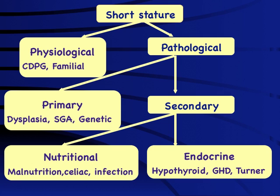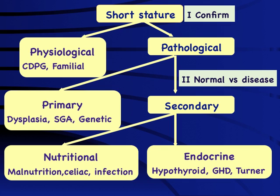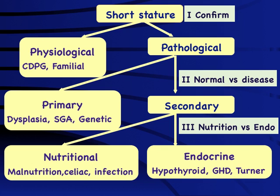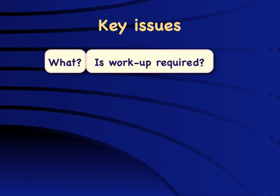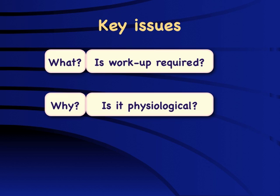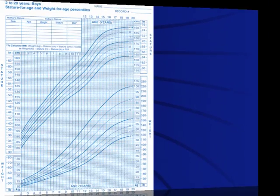Within pathological problems, the issue could lie within the growth plate — in dysplasia, small for gestational age, or genetic causes like Turner syndrome — or there could be secondary causes where the growth plate is normal but the environment is causing the problem, either nutritional (malnutrition, malabsorption, increased requirements, infection) or endocrine (hypothyroidism, growth hormone deficiency, or Turner syndrome). The key questions to answer are: does this child have short stature, is it a normal variation or disease, and is it nutritional or endocrine?